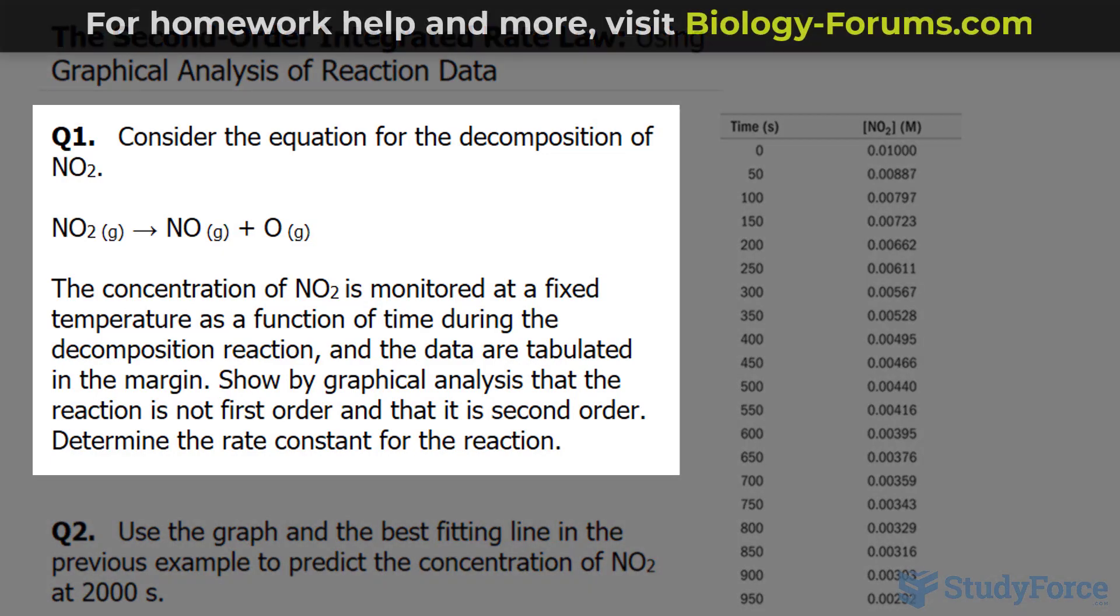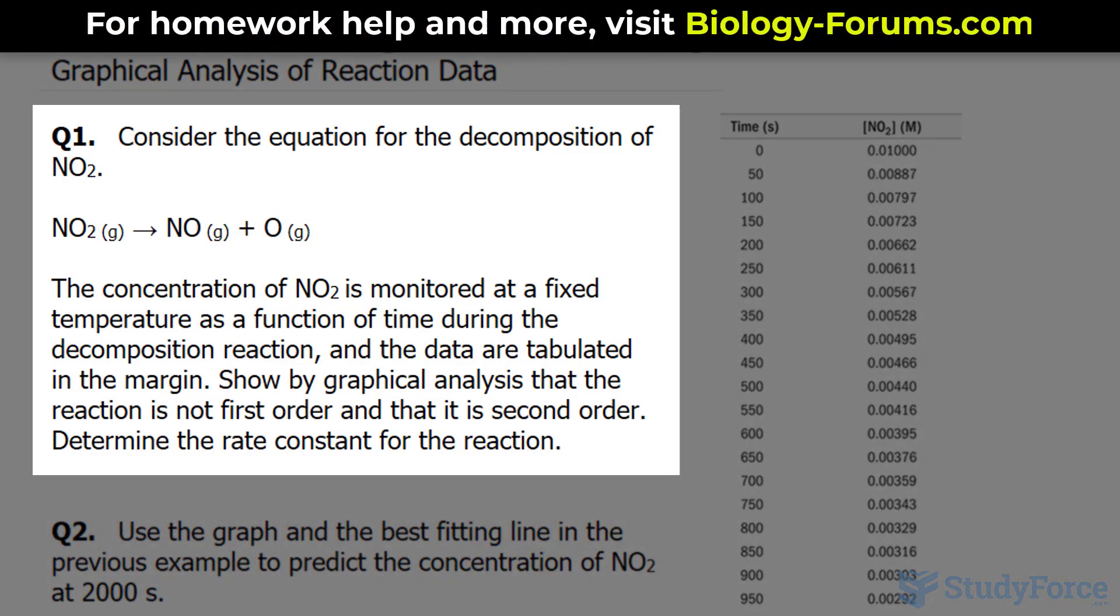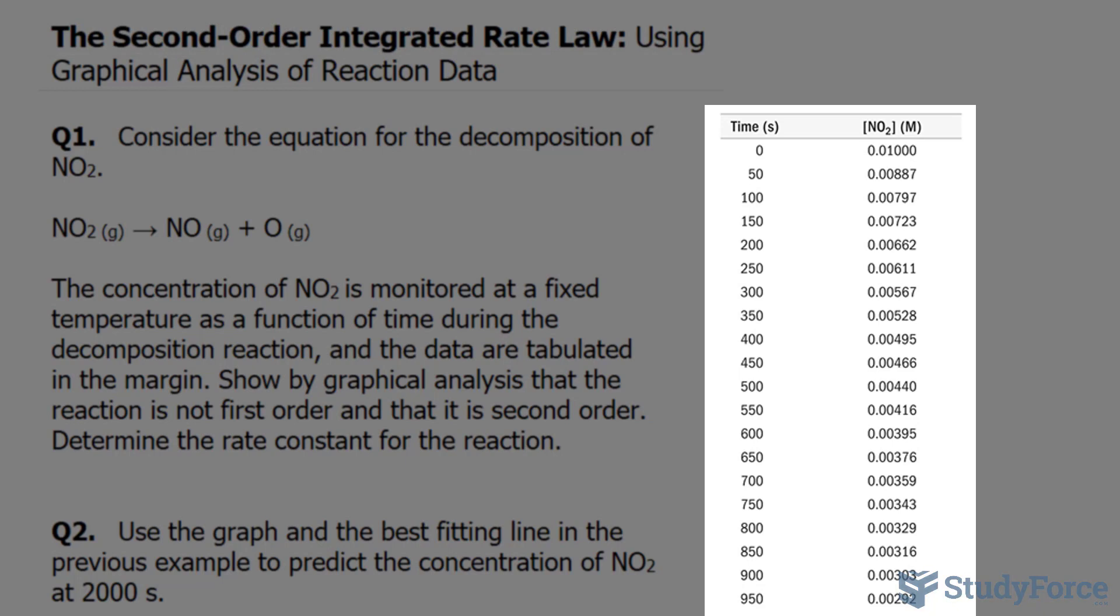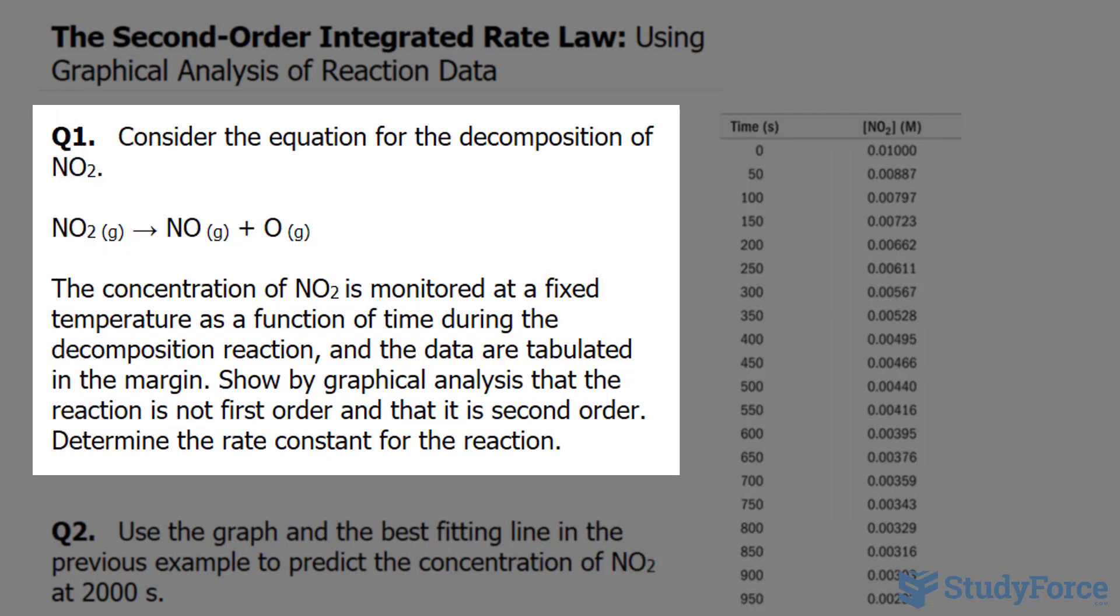The first question reads: consider the equation for the decomposition of nitrogen dioxide. The concentration of NO2 is monitored at fixed temperatures as a function of time during the decomposition reaction, and the data are tabulated in the margin. Show by graphical analysis that the reaction is not first-order and that it is second-order. Determine the rate constant for the reaction.